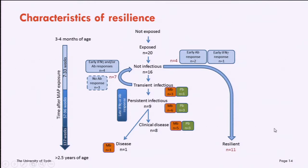This is my map of what I think happens in paratuberculosis based on all these trials. Starting with an exposed animal, it goes through a non-infectious state, then becomes transiently infectious. One arm can progress to persistent infectiousness and then to clinical disease, which can be multi- or paucibacillary. But transiently infectious animals can take a different pathway — shown by the thicker blue line — becoming non-infectious and resilient. The important immune markers appear to be the early antibody and early interferon gamma responses.